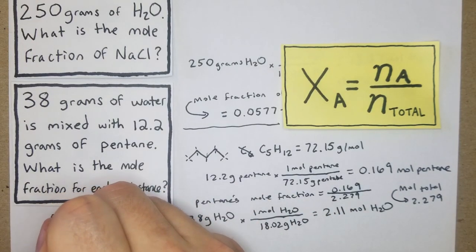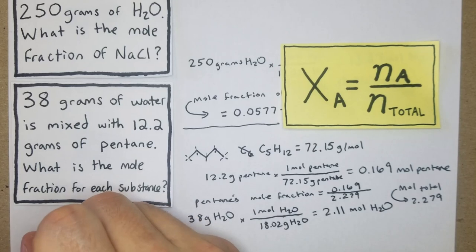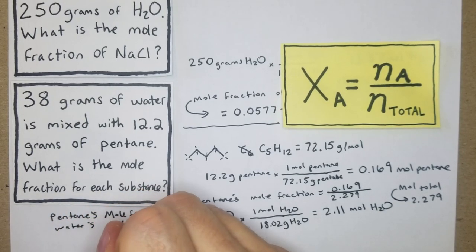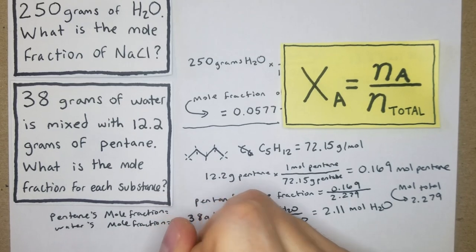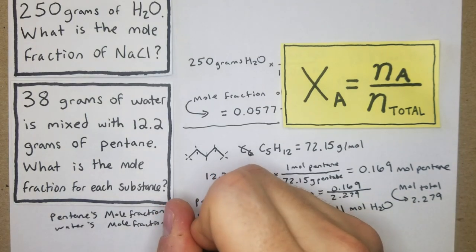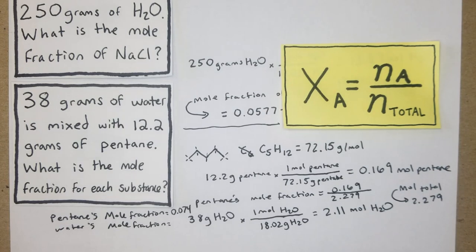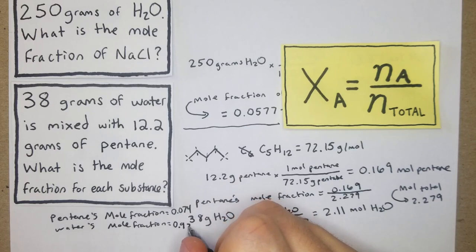So we have 0.169 divided by 2.279. So I'll put it all the way over here: pentane's mole fraction and water's mole fraction. For this we get 0.074 for pentane, and then for water we're just going to do the 2.11 divided by the total, which is 2.279, and we get 0.926.